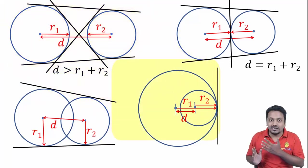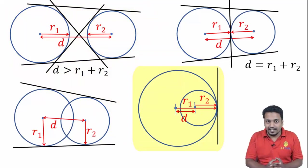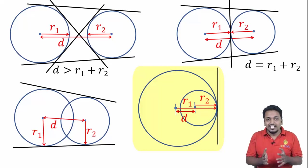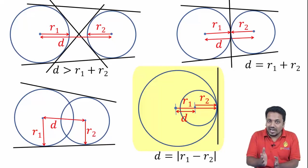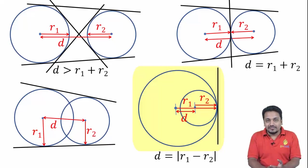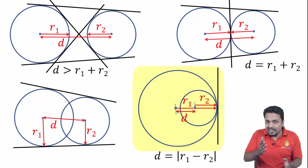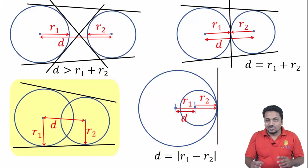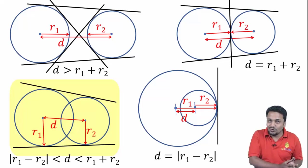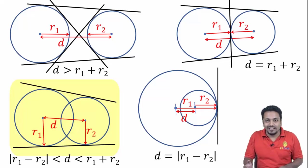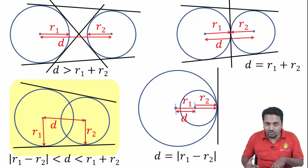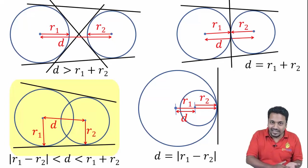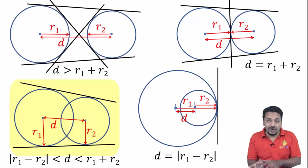Next we will see the case when circles touch internally and there is one direct common tangent — only one tangent. For this case, D should be equal to the absolute value of r1 minus r2. Between the case of one tangent and three tangents lies the case of two direct common tangents. So D will be greater than |r1 minus r2| and smaller than r1 plus r2. The circles will intersect, but one circle will not contain another.